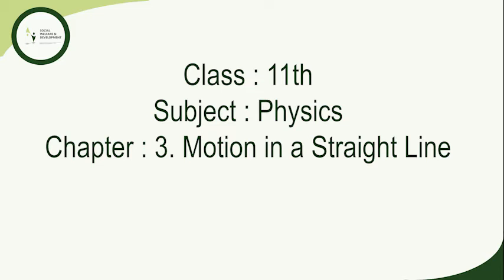Positions to the right of O are taken as positive and those to the left of O are taken as negative. Path length: consider the motion of a car along a straight line. We choose the x-axis to coincide with the path of the car's motion and the origin as the point from where the car started. Let P, Q, and R represent the positions of the car at different instances. In the first case, the car moves from O to P; the distance moved is OP = +360. This distance is called the path length. In the second case, the car moves back from P to Q; the path traversed is OP + PQ = 360 + 120 = 480.